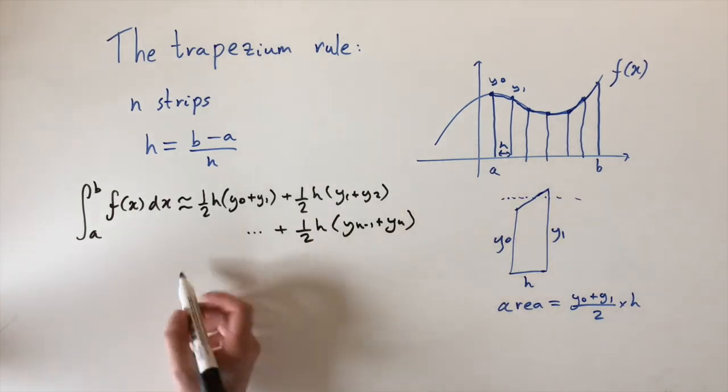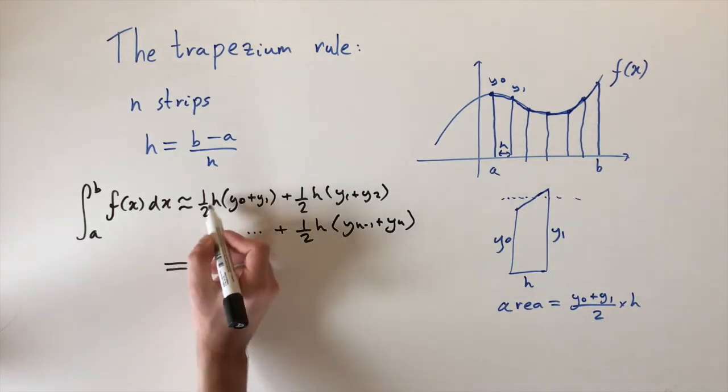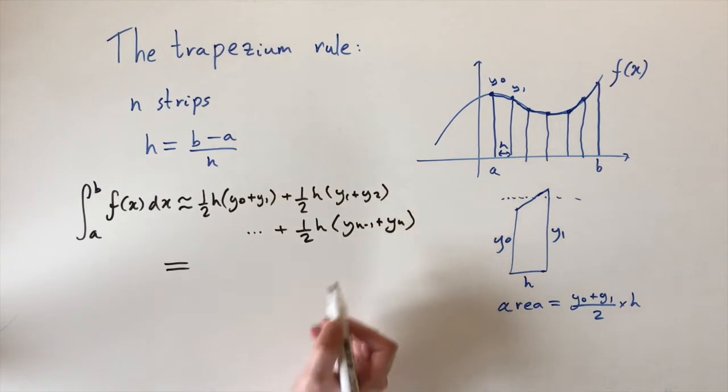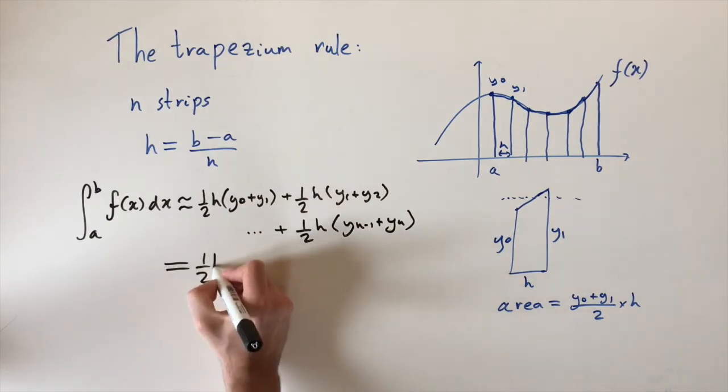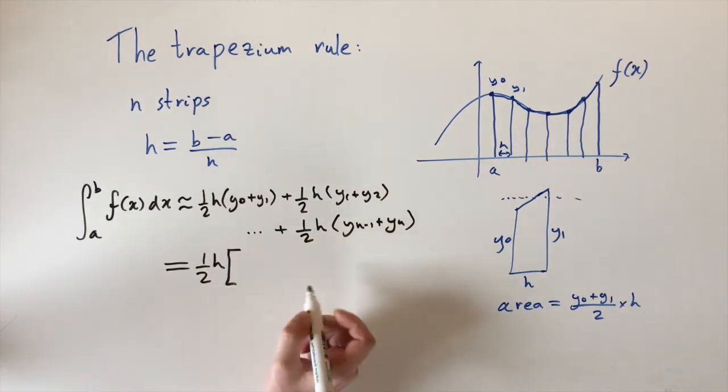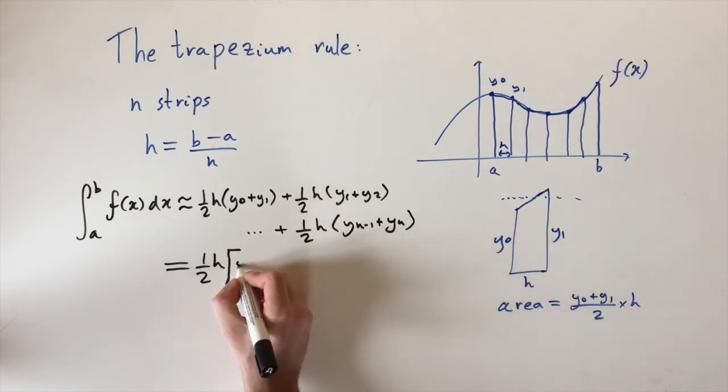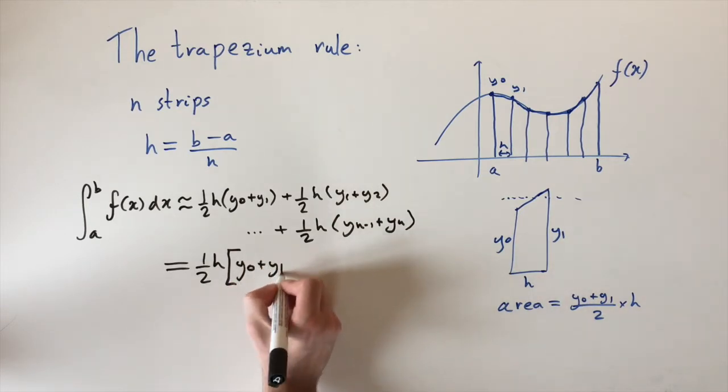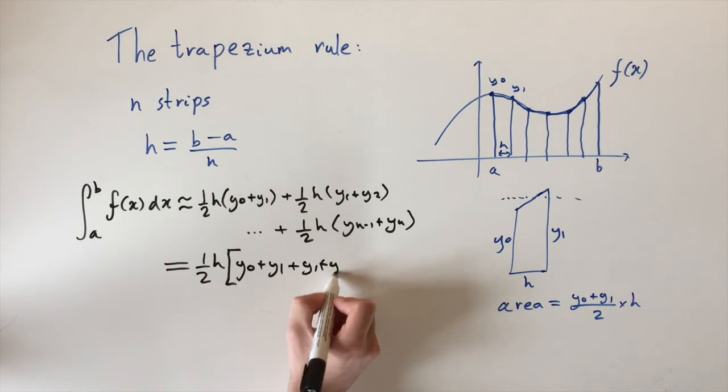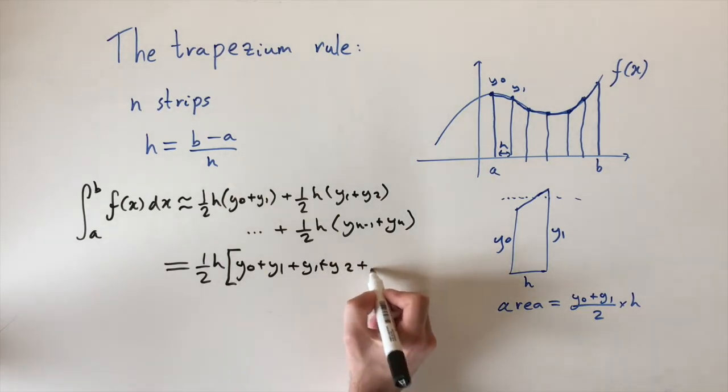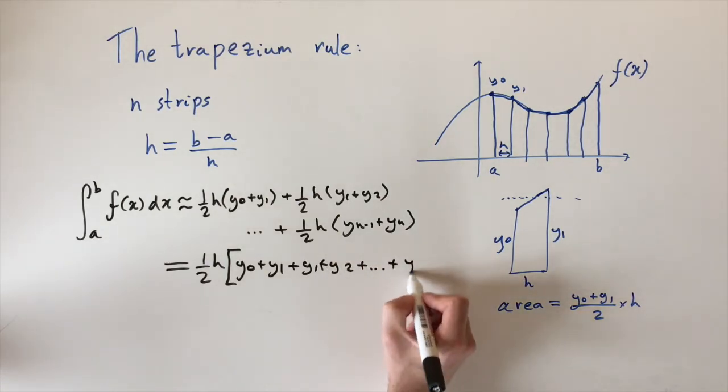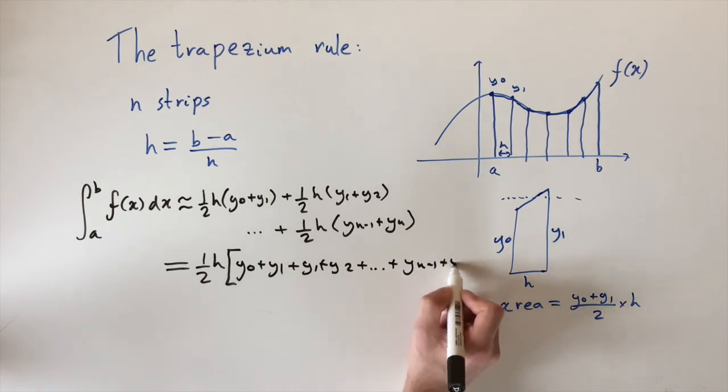Then we can do some simplifying. We can actually factor out a half times h because they all have that factor. Half times h with big brackets. Then what are we left with in the middle? We have y0 plus y1, and this is y1 plus y2, and this is going to carry on throughout all the middle terms, and then end up with yn minus 1 plus yn.